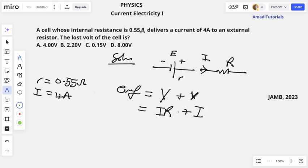So you see that the EMF is a summation of the lost volt, that's the voltage lost to the cell itself, plus the voltage drop from the external resistor. So lost volt is represented by this function here.